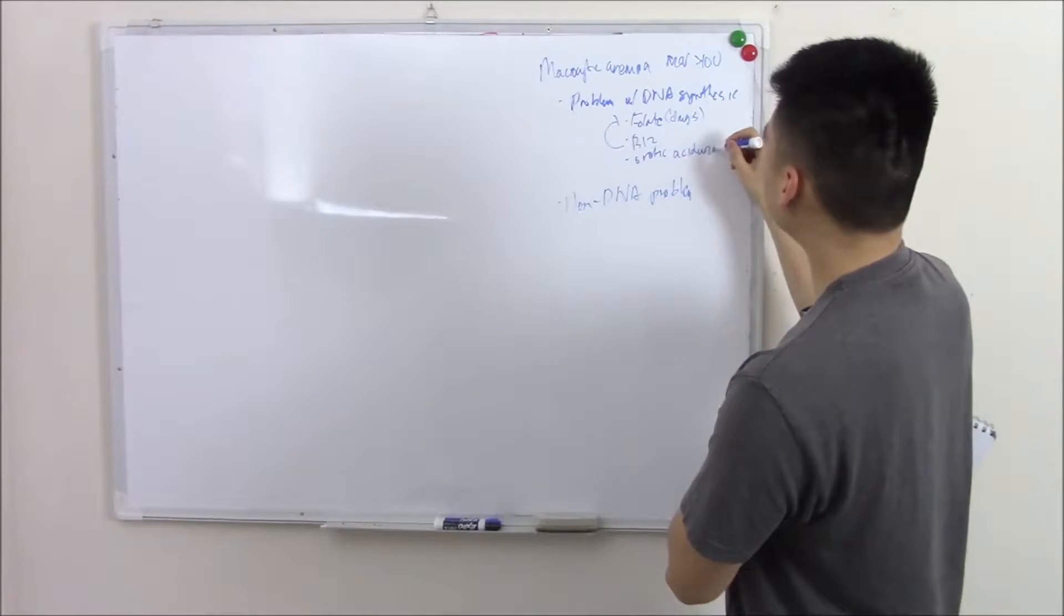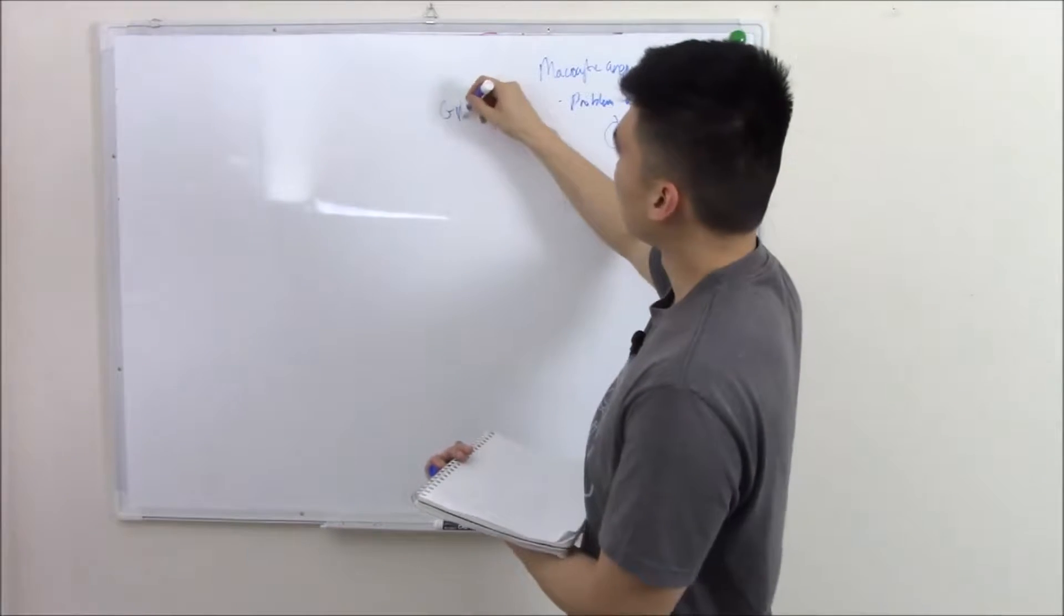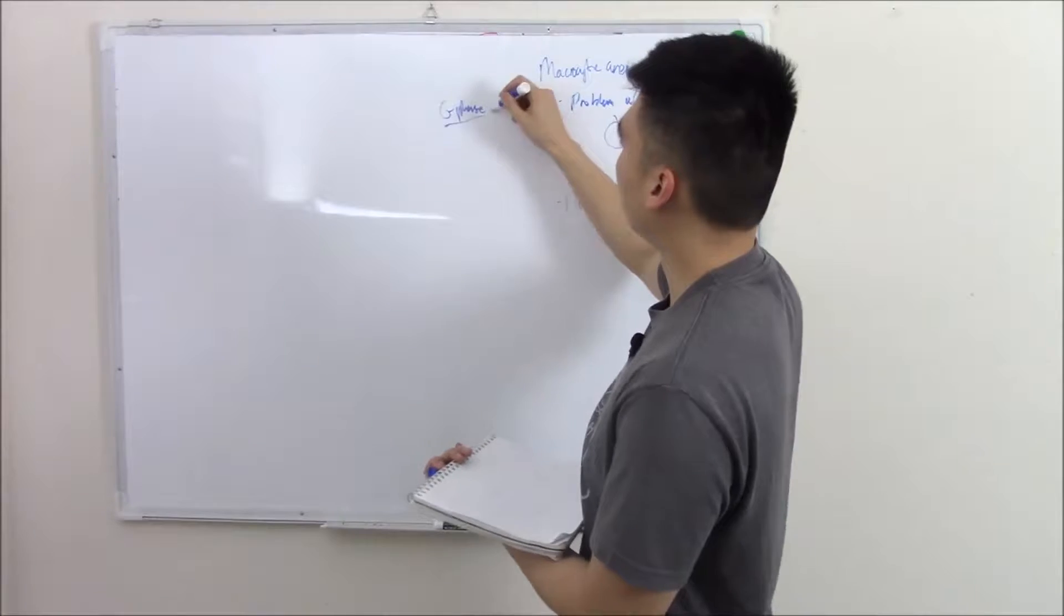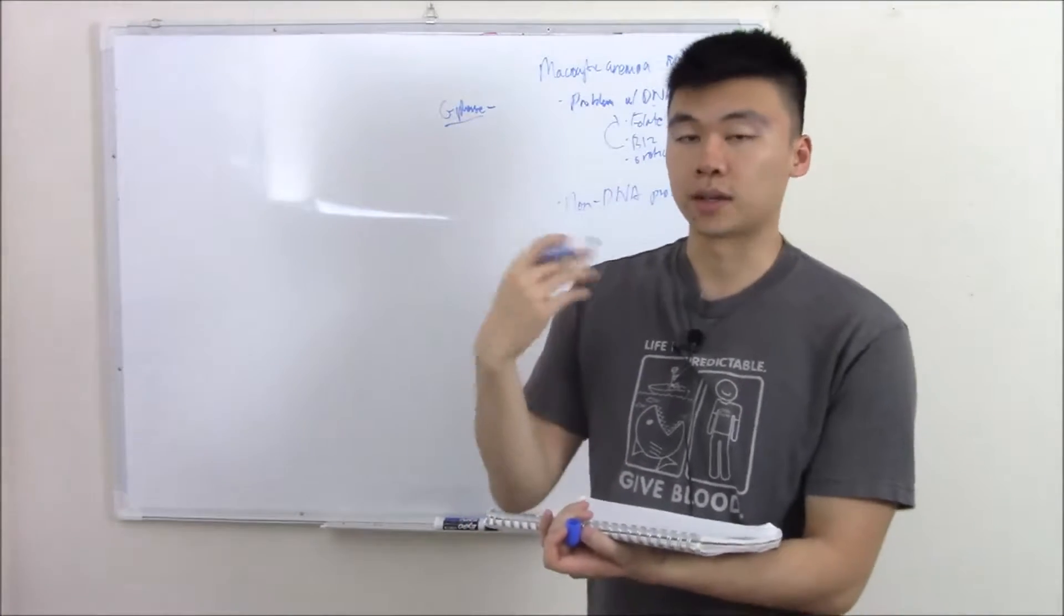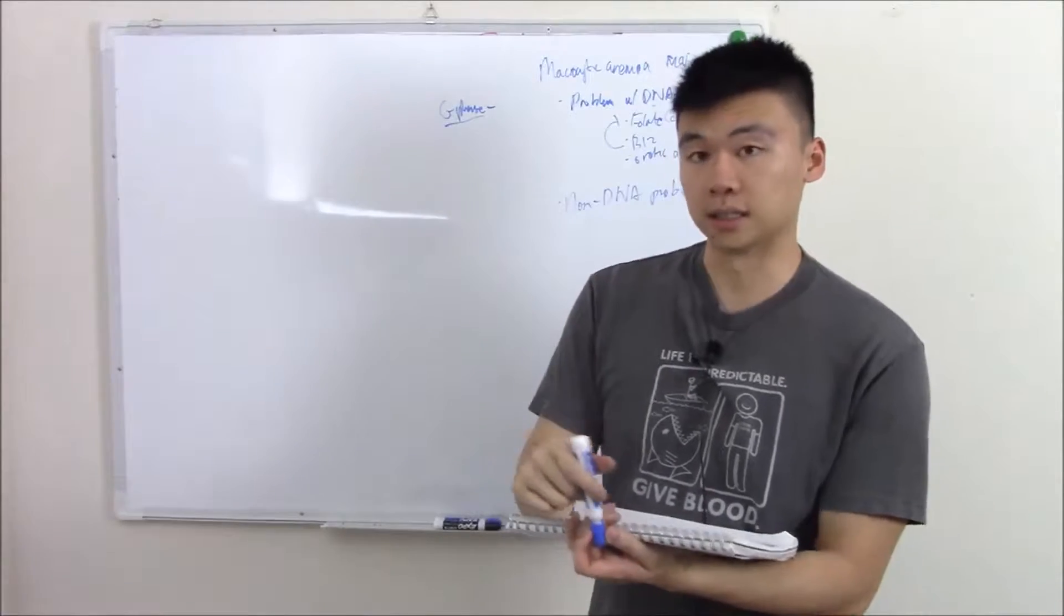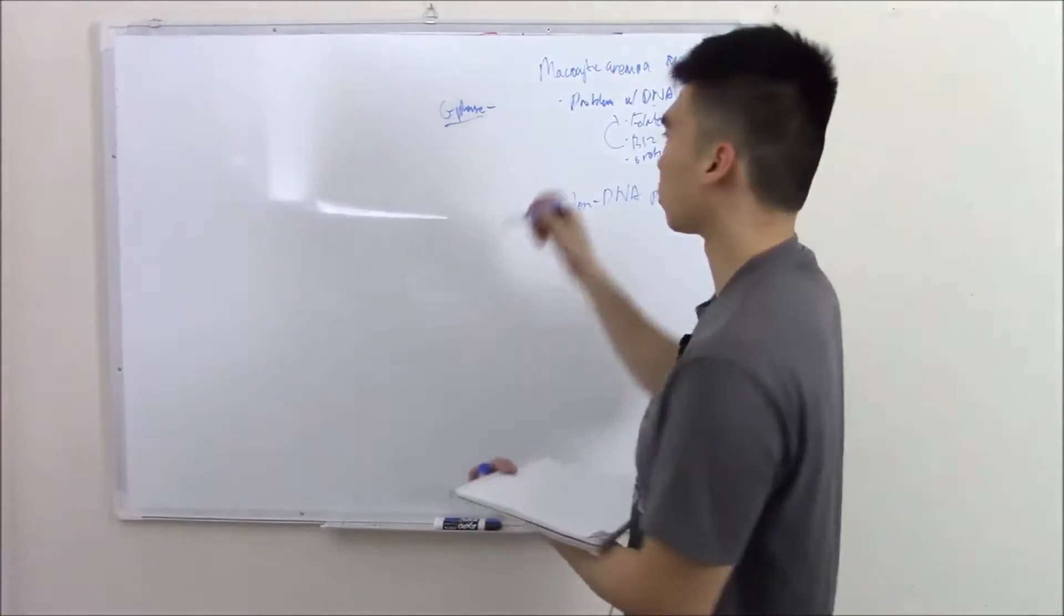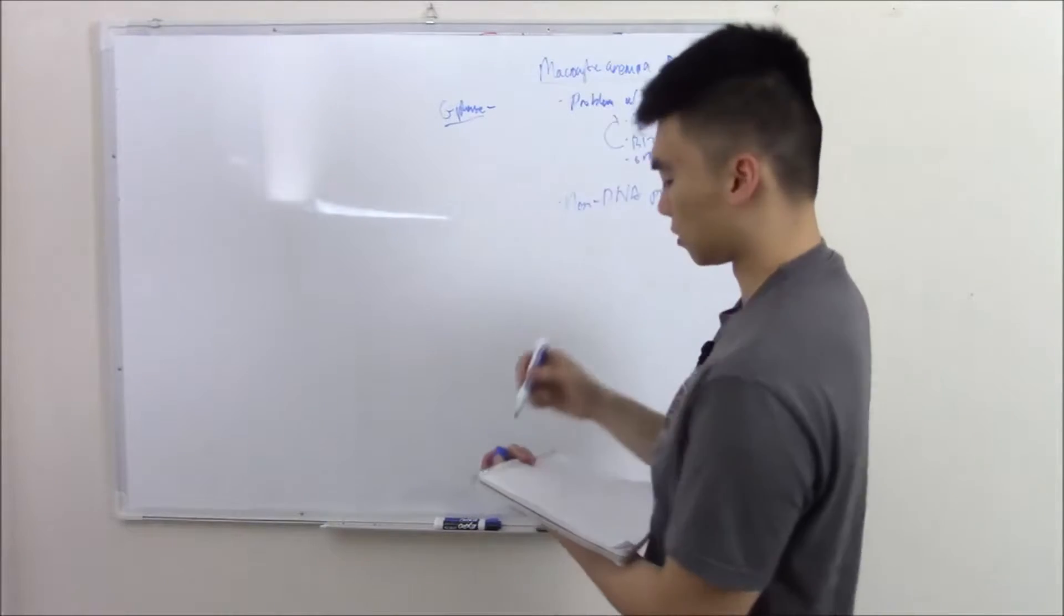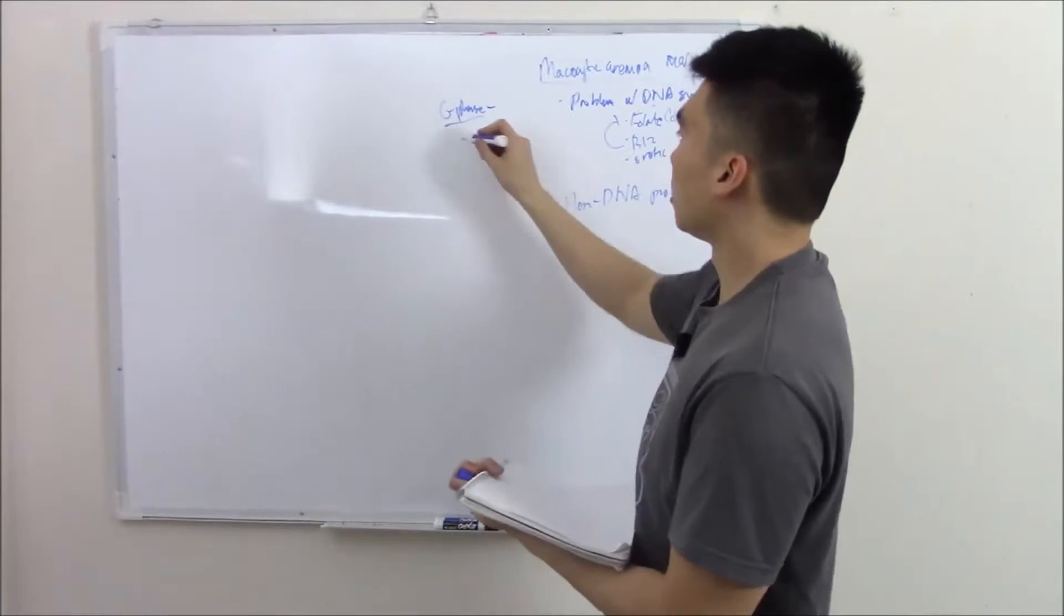orotic aciduria. If you can't synthesize DNA for whatever reason, then your cell is stuck in the G phase, the growth phase. It can't undergo mitosis or go to the next stage because it needs DNA. So it's stuck in that growth phase and just keeps growing and growing, and that's why you get large cells. Those cells also can't mature because they can't undergo mitosis.